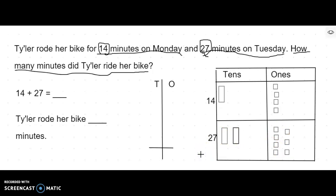I'm also going to have to set that up vertically. I'm going to have one 10 and four ones for 14 plus two 10s and seven ones for 27.